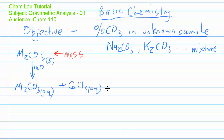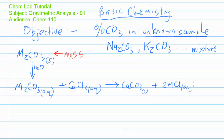When we add the aqueous solution of calcium chloride to the aqueous solution of the unknown carbonate, what's going to be produced is solid calcium carbonate — CaCO₃(s). Solid calcium carbonate is formed because calcium carbonate is highly insoluble in water, so it will precipitate out of solution. We'll be left with an aqueous solution of some unknown chloride.